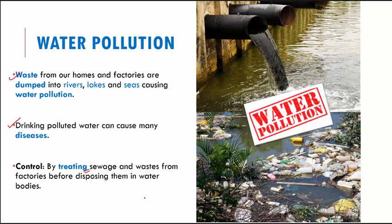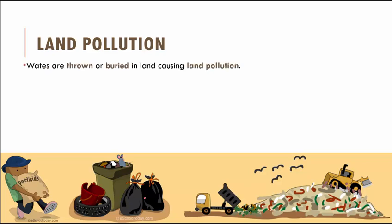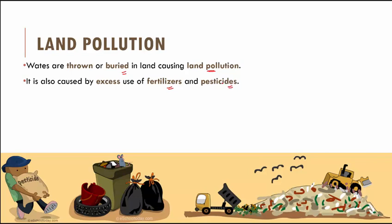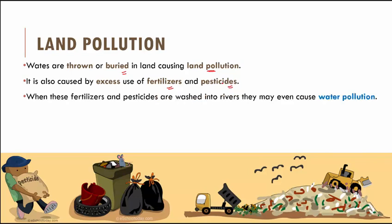The third type is land pollution. Waste that is thrown or buried in land causes land pollution. You may have heard of landfills where all waste is dumped into large pits. Also, the excess use of fertilizers and pesticides causes land pollution. When it rains, these excess fertilizers and pesticides get washed into nearby rivers, lakes, and other water bodies, which in turn also causes water pollution.